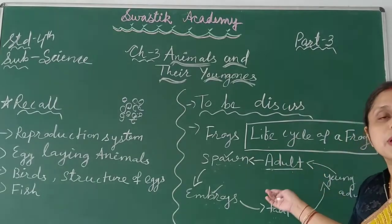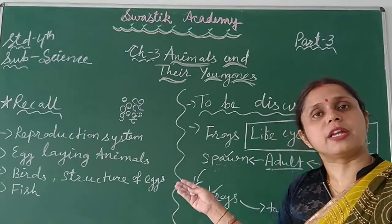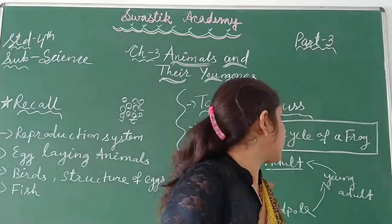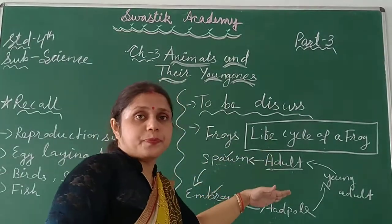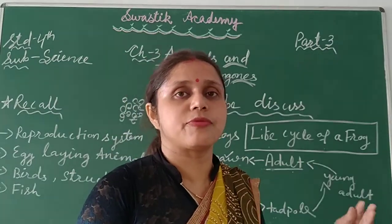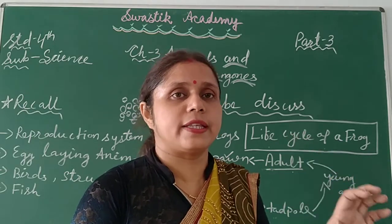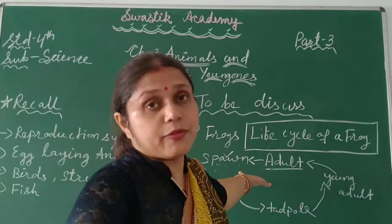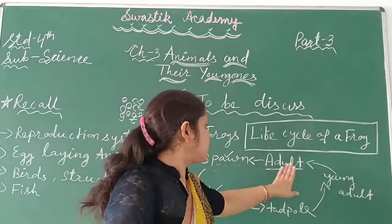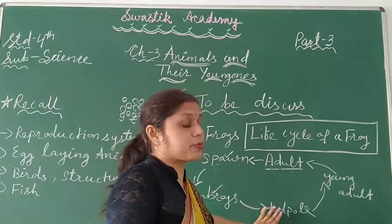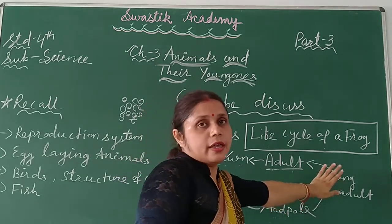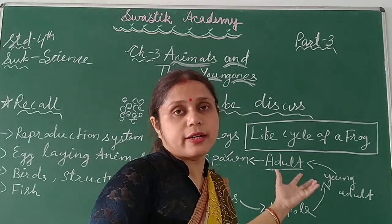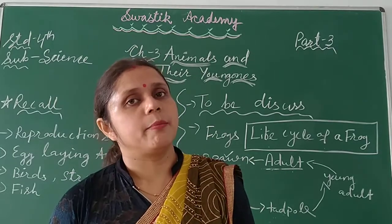This is the life cycle of a frog. First adult frog, then spawn, then embryo, then tadpole, then young frog, then adult frog. Because they look different from each other, this system is called metamorphosis.